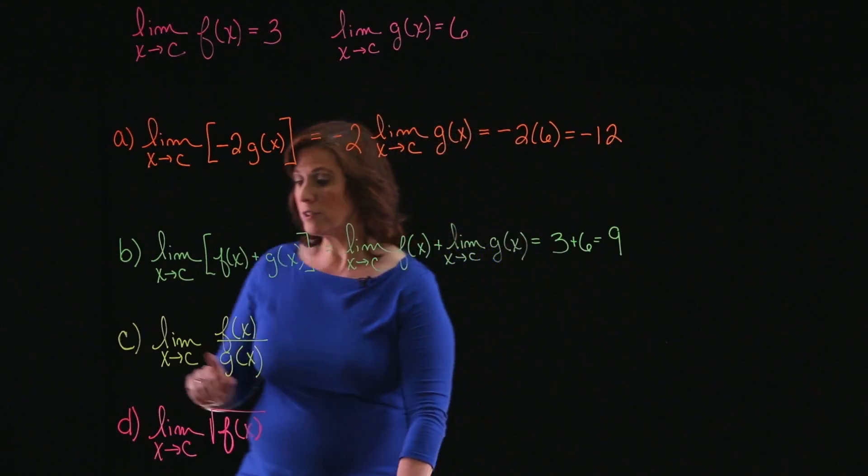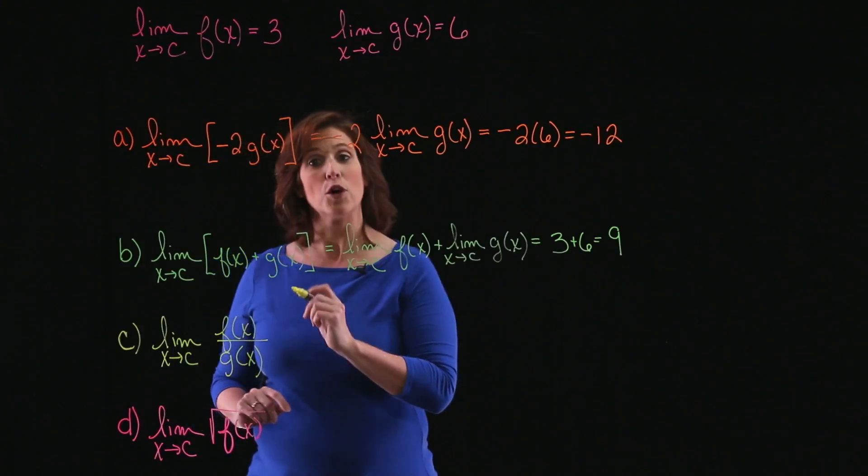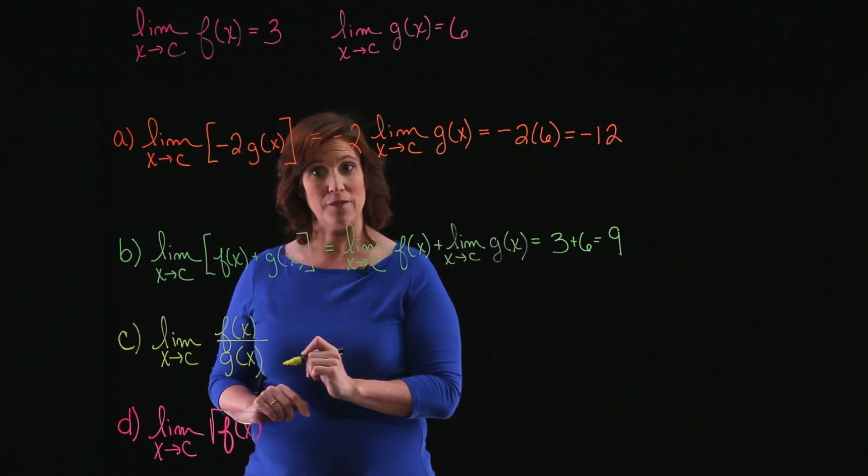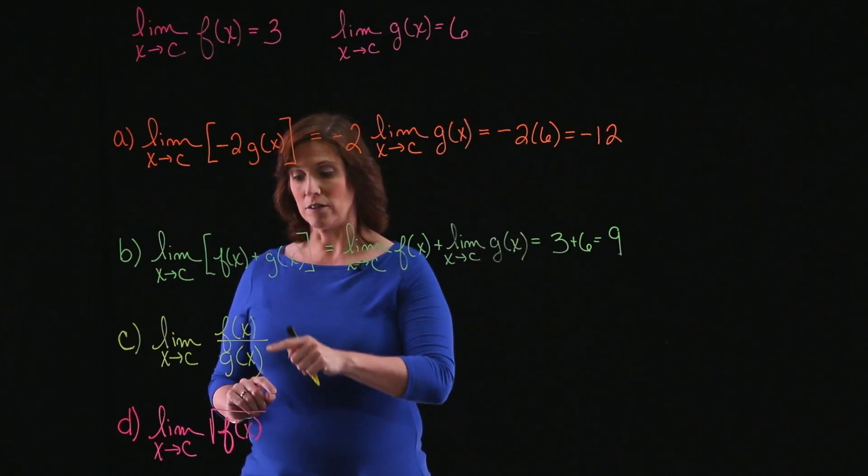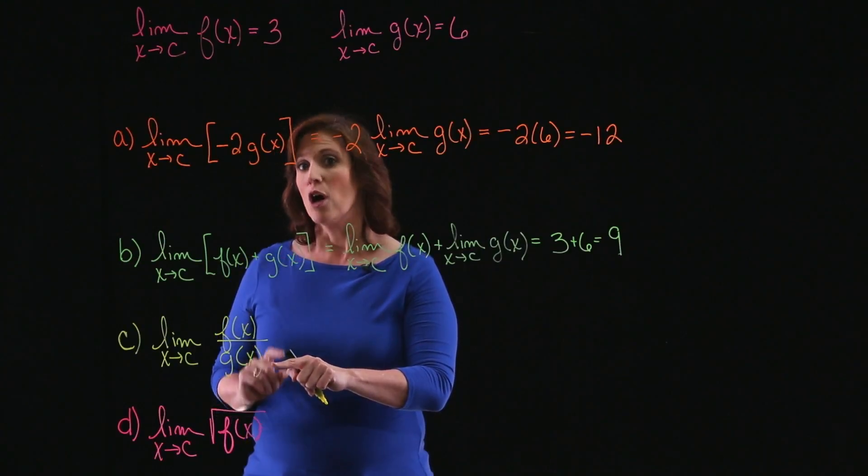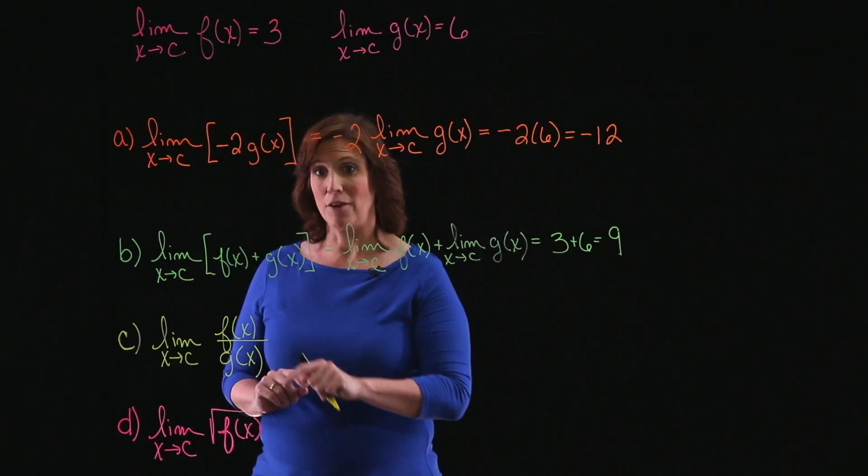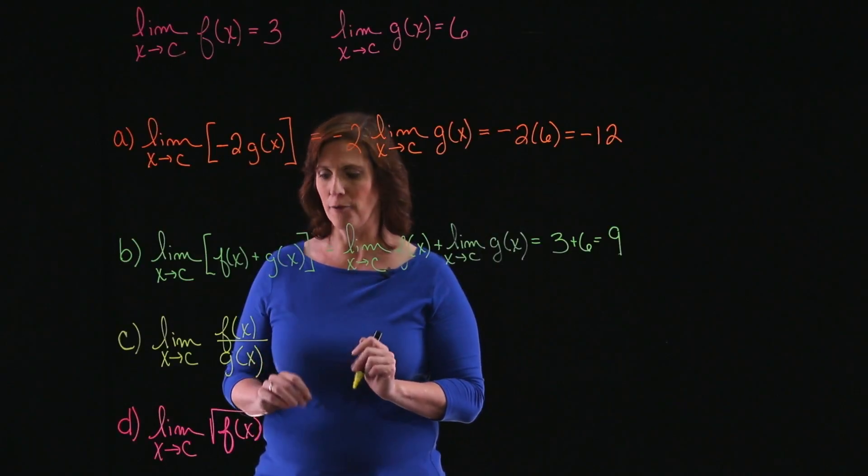For our third limit, we're looking for the limit as x approaches c of the quotient, f of x over g of x. Now, I know that I can split this into the limit of the numerator divided by the limit of the denominator, provided that the limit of the denominator is not 0. So we have to be a little bit careful on this one.